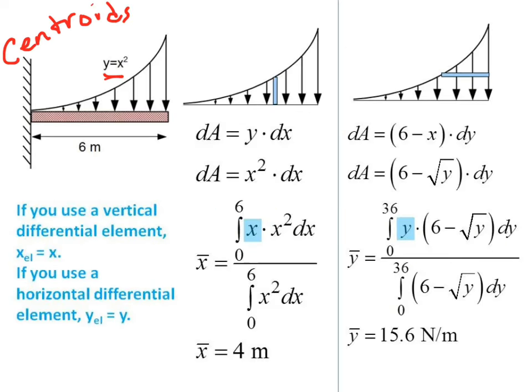When we did the example y equals x squared, with the vertical rectangle here, dA was the base times height, x squared times dx, and dA over here was (6 minus x) times dy. We had to then solve this x to get it in terms of y, so that you had root y and dy, and you could plug that in and you got x-bar and y-bar.